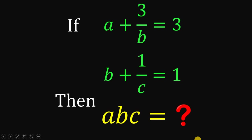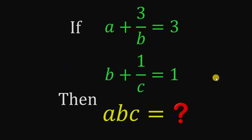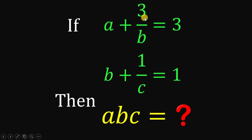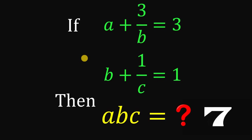Can you solve this math challenge? Here's the question: if a plus 3 over b equals 3, and b plus 1 over c equals 1, then what is the value of a times b times c? You can pause this video if you want to give this problem a try.